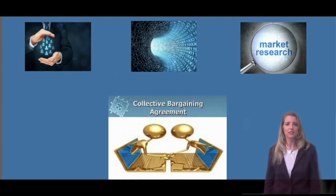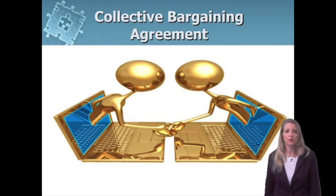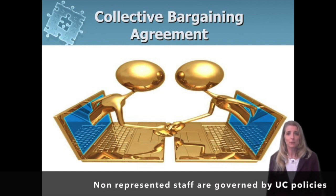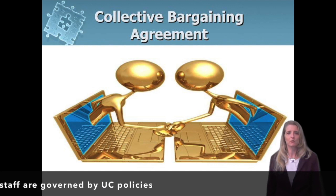As a new manager, it's important to understand that within the University of California system, compensation is heavily regulated. The majority of our employees are represented by unions, which means that their compensation is outlined and governed by their respective collective bargaining agreements. For employees that are not represented by a union, compensation actions are governed by UC staff personnel policies.